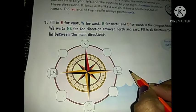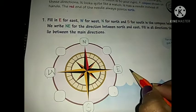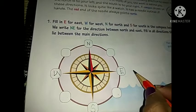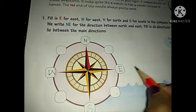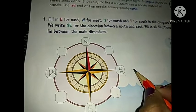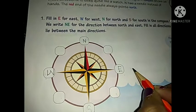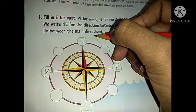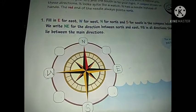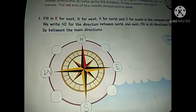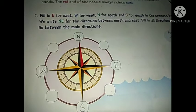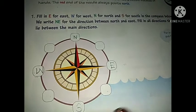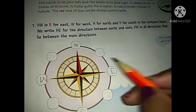If the sun rises from here in the East direction, then just behind you is West. Your left hand side will be North, and your right hand side will be South. Now, dear children, we have always learned these four main directions.